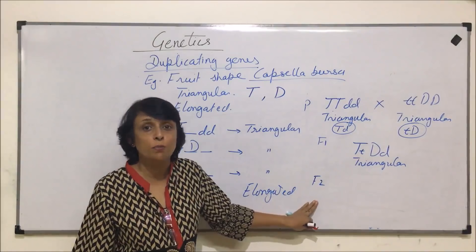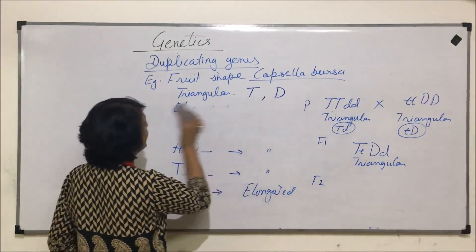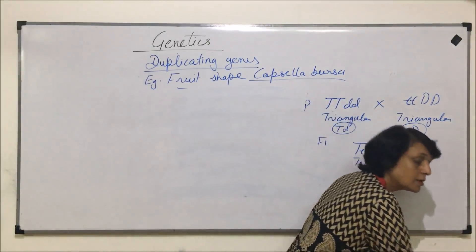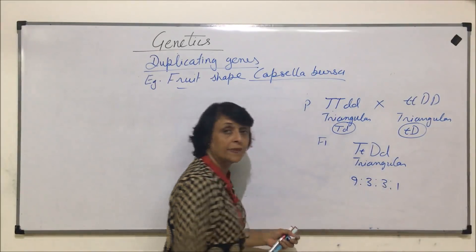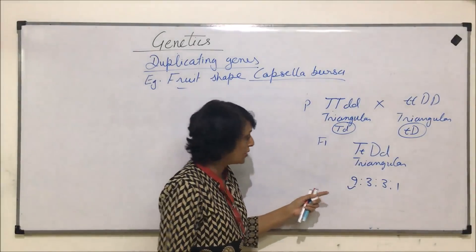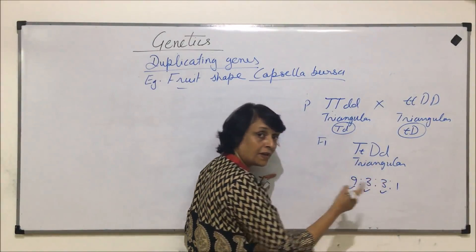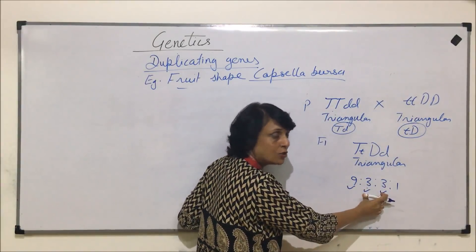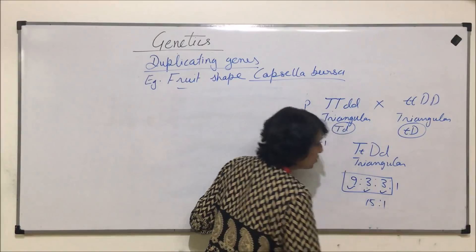Without making a cross we can interpret the result, but let us first construct a Punnett square and verify. In a typical Mendelian dihybrid cross, the ratio is 9:3:3:1. In this case, the 9 have both genes dominant, the first group of 3 has only T dominant, and the other group of 3 has only D dominant. Since T dominant alone gives triangular and D dominant alone also gives triangular, all three groups show the same phenotype, so the ratio should be 15:1.